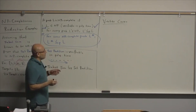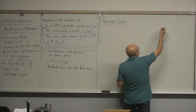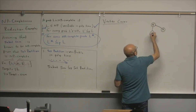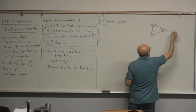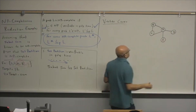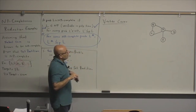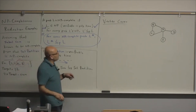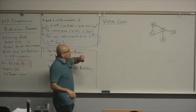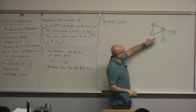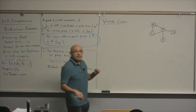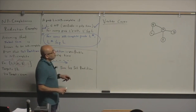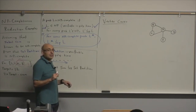The first problem is Vertex Cover. If I give you a graph with vertices A, B, C, D, and E, you need to find a minimum number of vertices that cover all edges. So you need to select the minimum number of vertices such that every edge in the graph is covered.